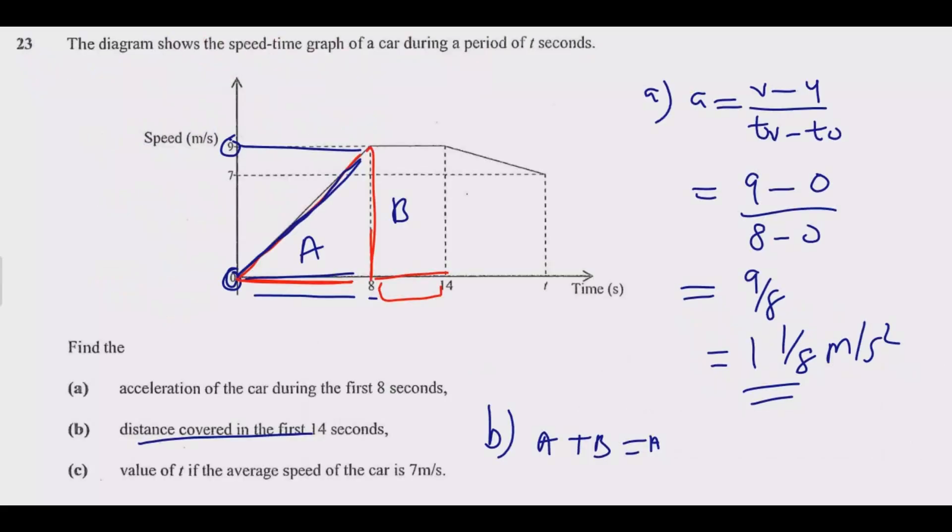Then we look at the last part of the question: value of T if the average speed of the car is 7 meters per second. So how can we find the value of T? We use the fact that speed is equal to distance over time. So we need to find the function for speed, then solve for T. We know the area from here to here is 90, then to find the total distance, we need to find also the distance under this one in terms of T.